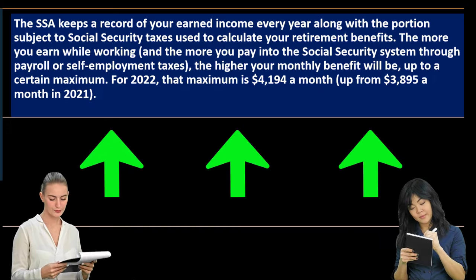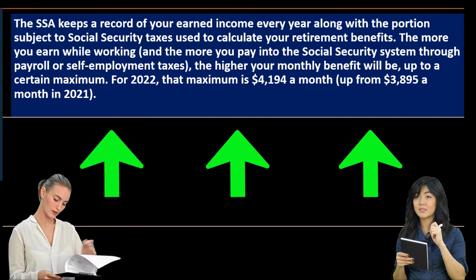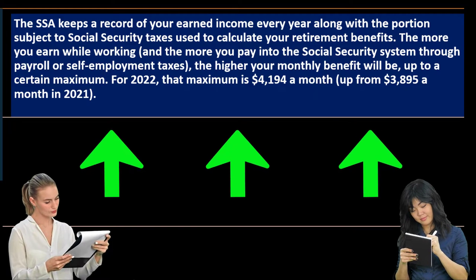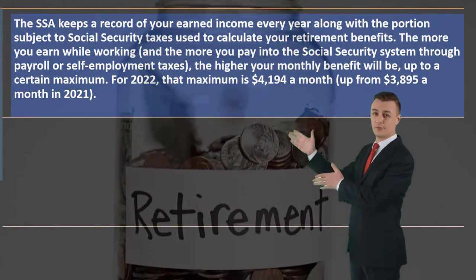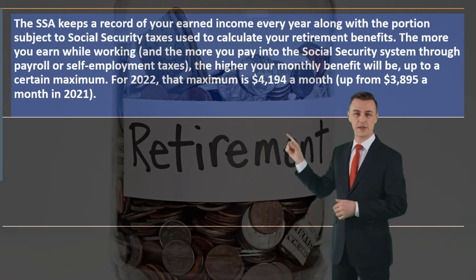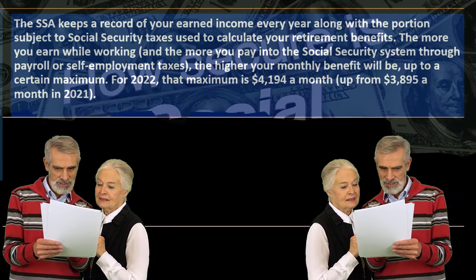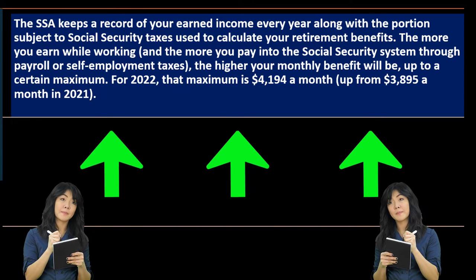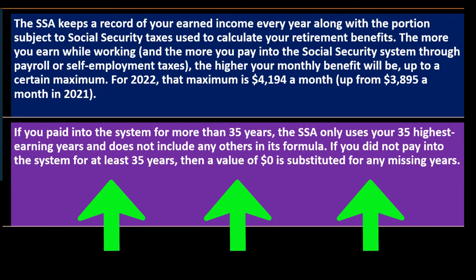The SSA keeps a record of your earned income every year, along with the portion subject to Social Security taxes, used to calculate retirement benefits. The more you earn while working, the more you pay into the Social Security system through payroll and self-employment taxes, and the higher your monthly benefit will be — up to a certain maximum. For 2022, the maximum is $4,194 a month, up from $3,895 a month in 2021.